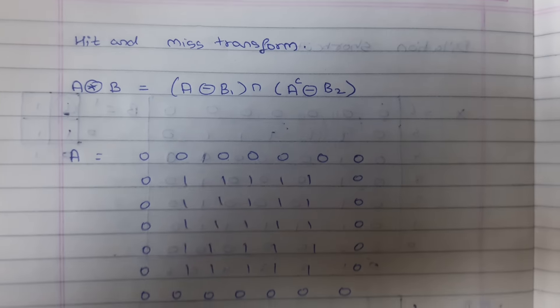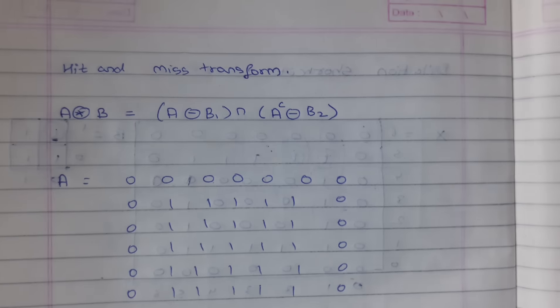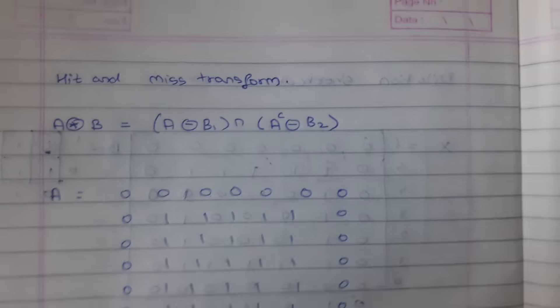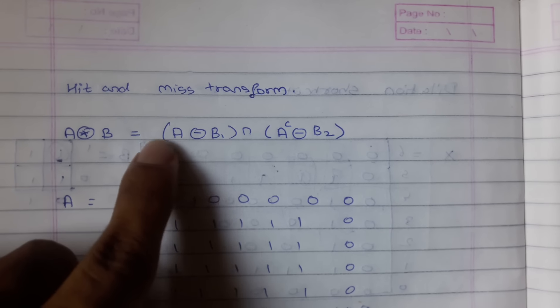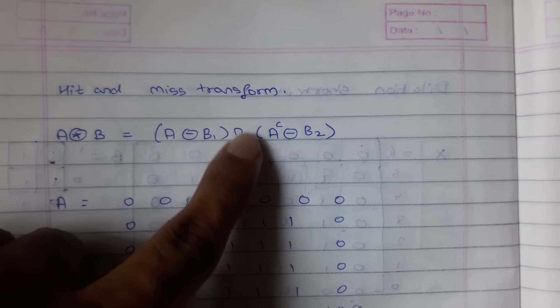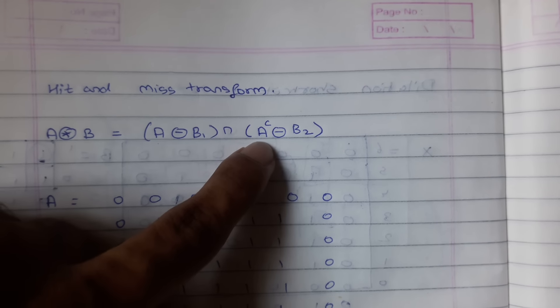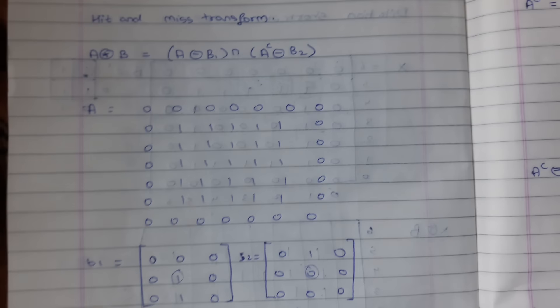The next important topic is the hit and miss transform. It is denoted as A erosion with B1, intersected with the complement of A erosion with B2. Let's understand this with an example.